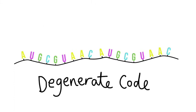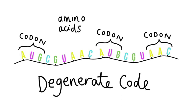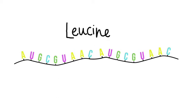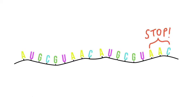The code is degenerate. This means that amino acids can have more than one codon. For example, the amino acid leucine has six different codons. Sometimes three bases can code for a stop codon. This marks the end of a polypeptide chain.